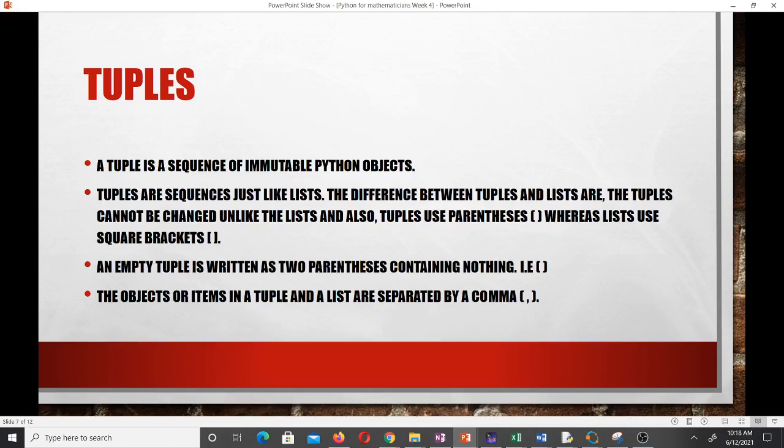Now that we are done with the list, let's go to tuples. A tuple is a sequence of immutable Python objects. If you recall we said the list is mutable but the tuple is immutable. That means that once their value is set you can't change them, you can't do any changes to them.